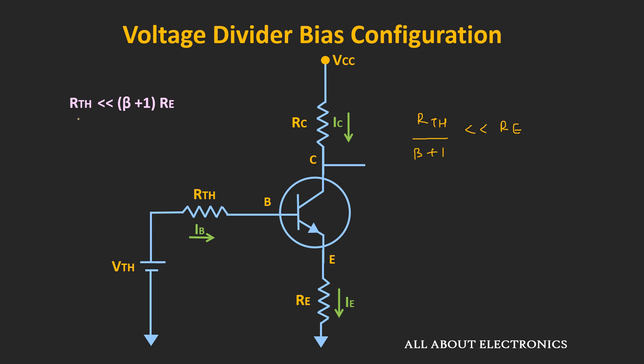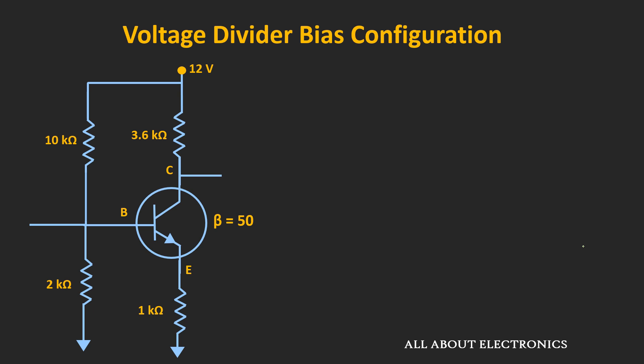Now practically, the value of this Thevenin's equivalent resistance should be at least 100 times less than this term. That means Rth should be less than or equal to 0.01 times β plus 1 times Re. But sometimes it is not feasible to follow this criteria, as the values of R1 and R2 would become very small. So for a relatively stable operating point, the value of Rth should be at least 10 times smaller than this term. If this condition is satisfied, then we can still use the approximate analysis.